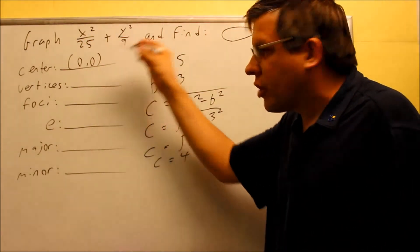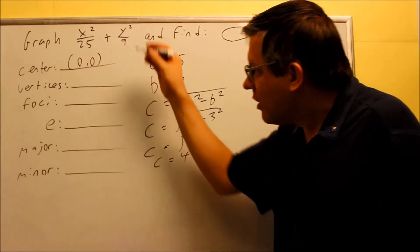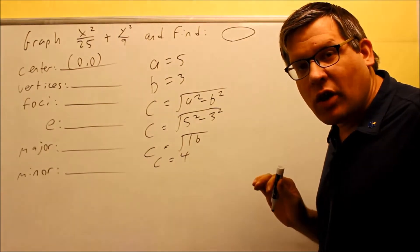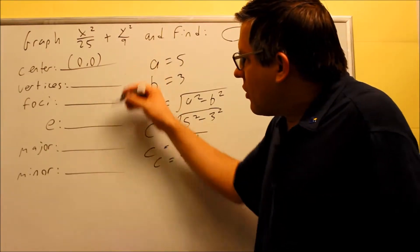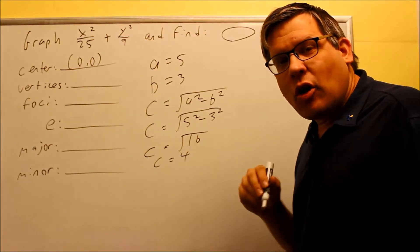The vertices and foci, we're going to wait and we're going to get those off the graph. We could use the formulas that's listed in the notes, but instead, I'm going to go ahead and get all the information off the graph itself. Okay, the eccentricity, the formula for that from the notes is c over a.